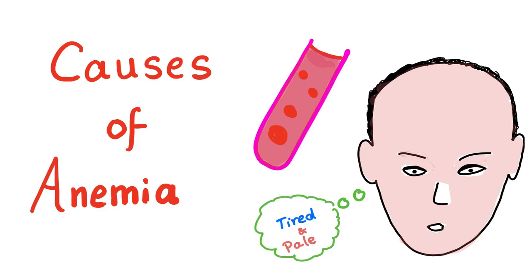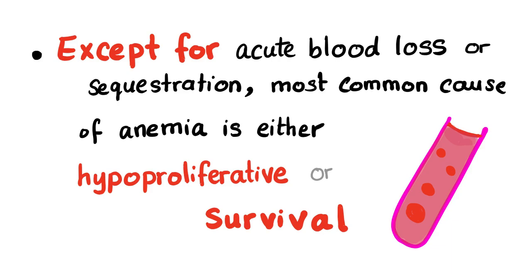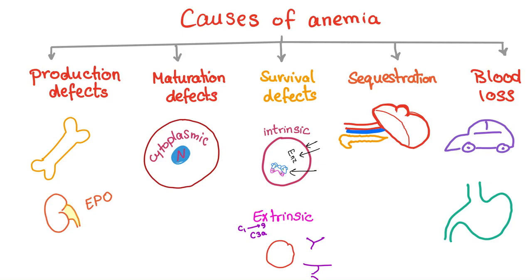Remember the symptoms of anemia: pale and tired. Regarding causes of anemia, except for acute blood loss or sequestration, the most common cause of anemia is either a hypoproliferative cause or a survival defect. So the main causes are hypoproliferative or survival problems, once we have ruled out acute blood loss and sequestration.